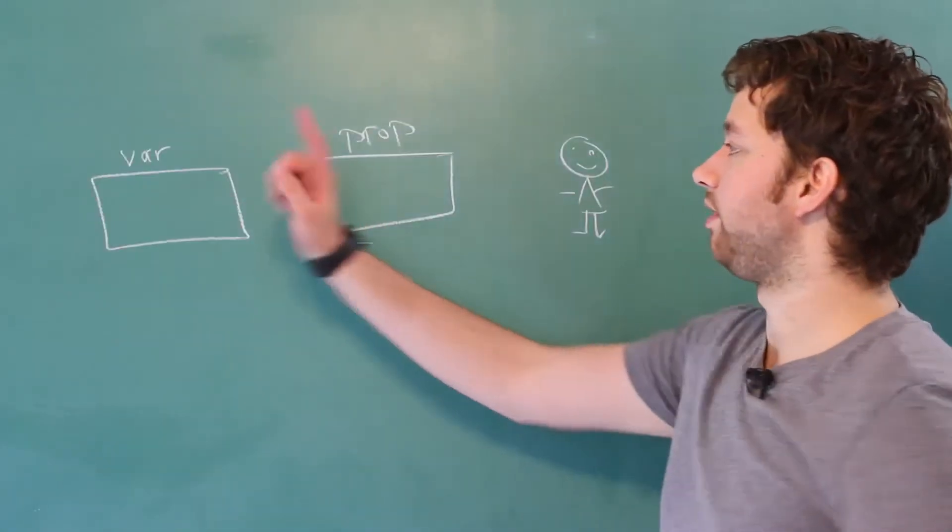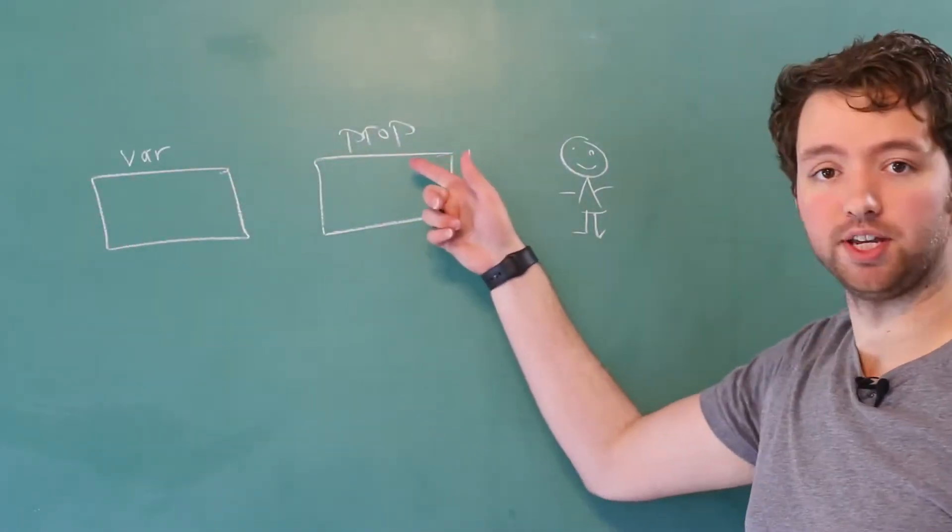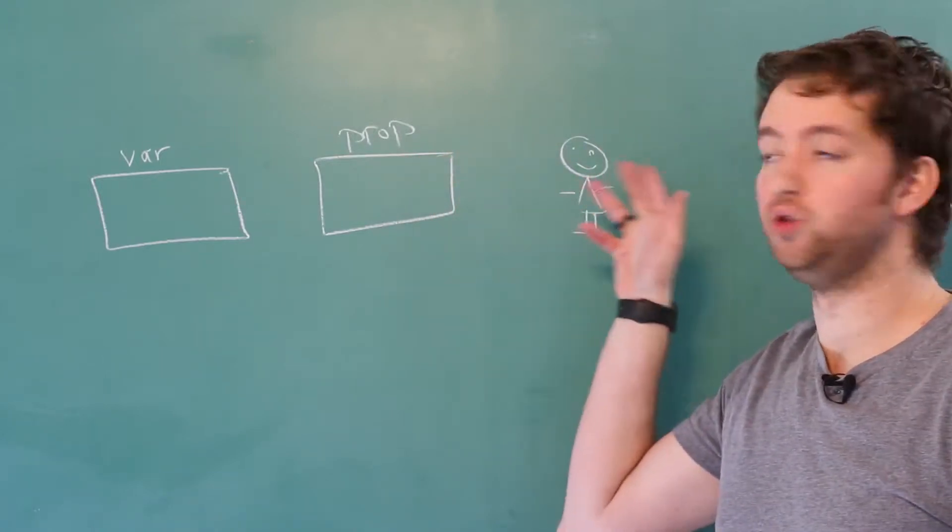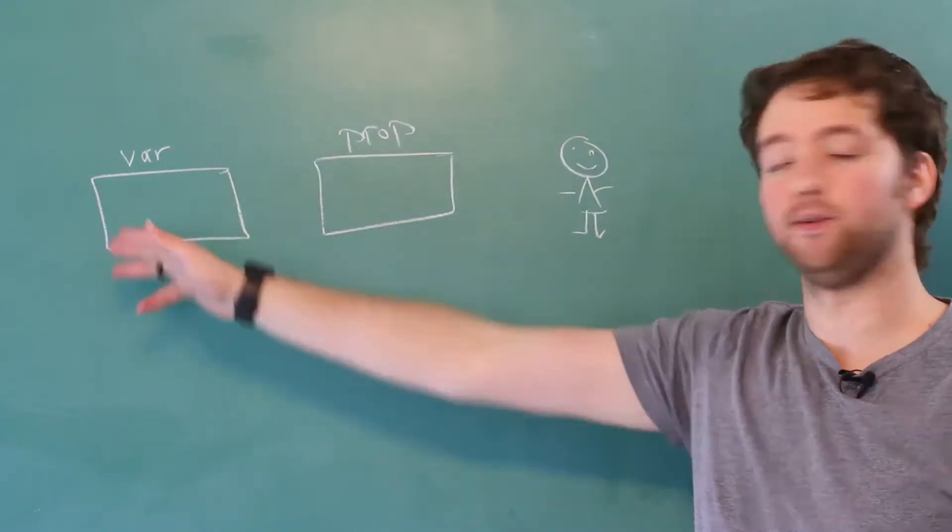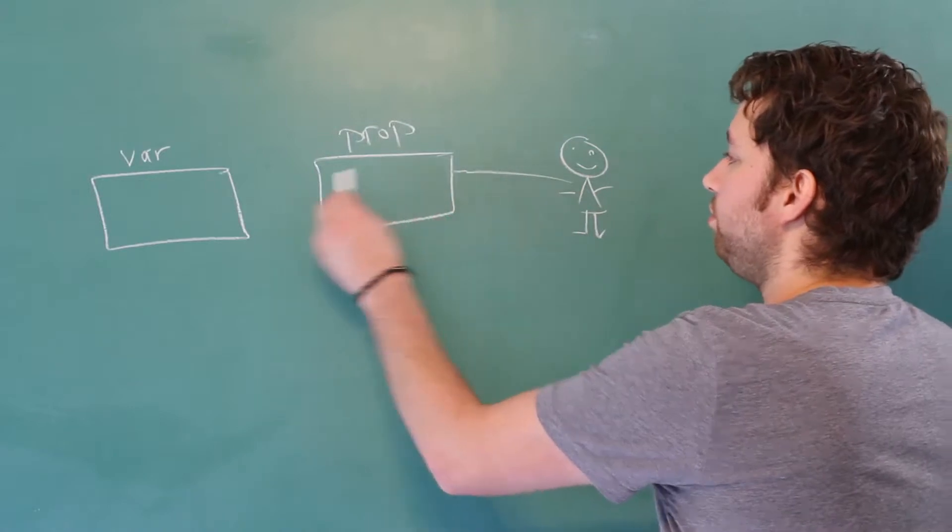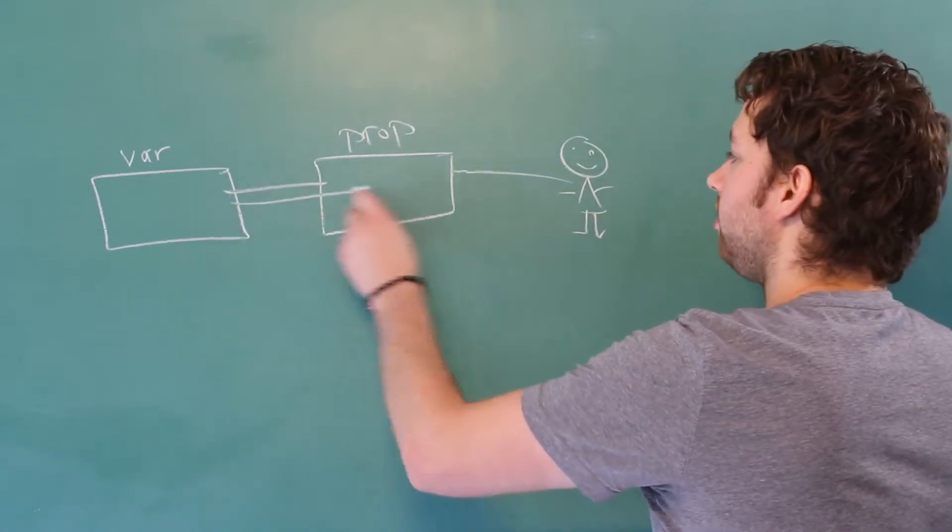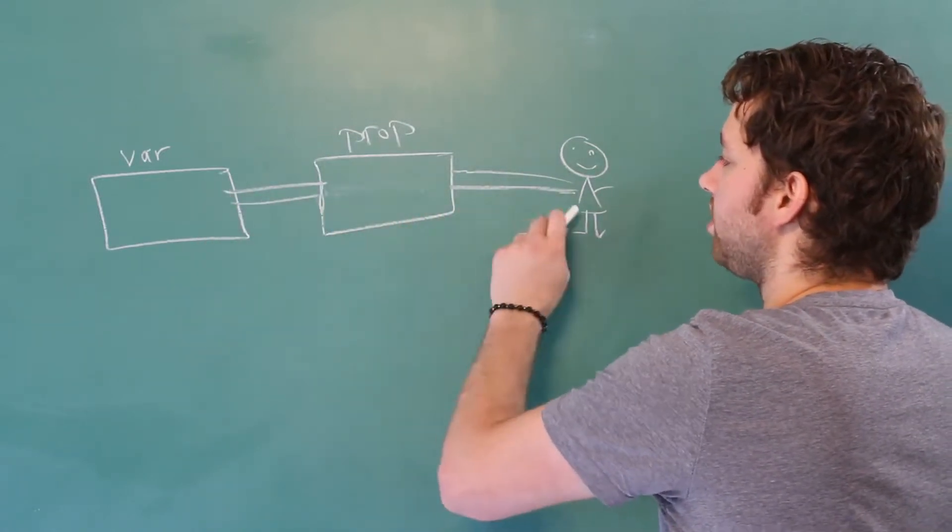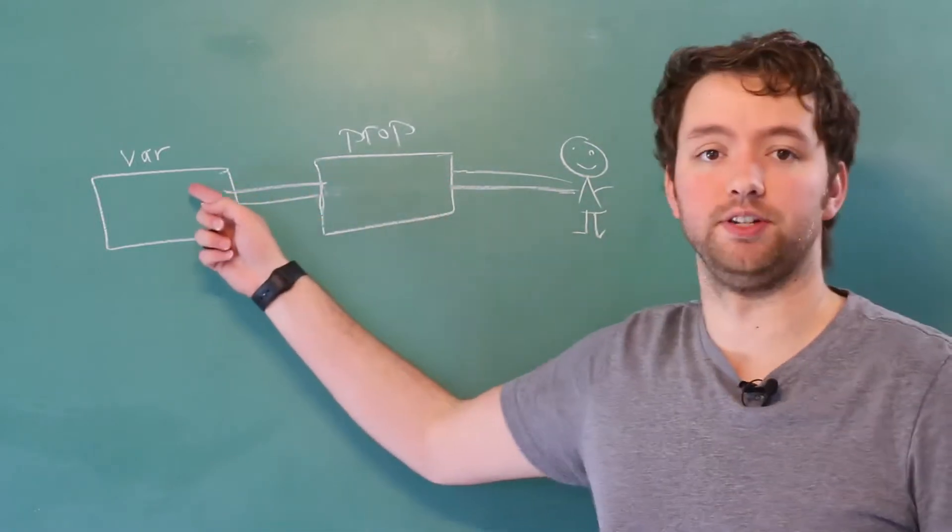So we have the variable, which is the field. Then we have a property. And then we have the person who wants to get access to that field. We have to go through the property to get or to set the value of this field.